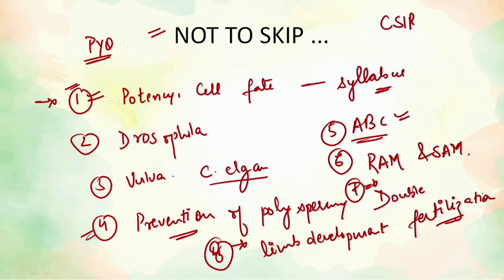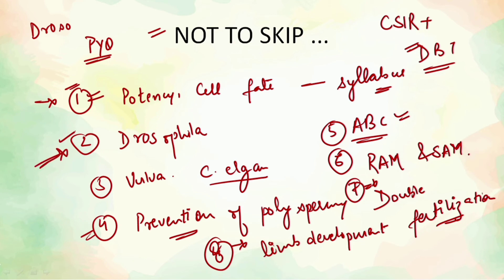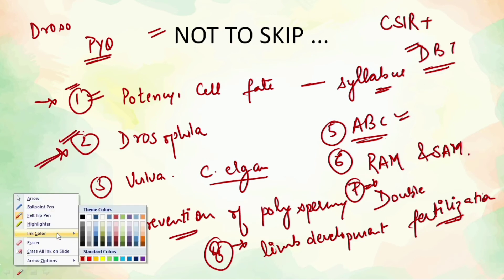These topics are very important for both the CSIR and DBT exams — this unit holds significant importance in both. In DBT 2019 itself, there was a question on Drosophila's mutation case where bicoid was injected to the other side. So do not skip Drosophila under any circumstances.